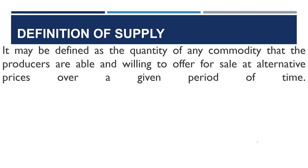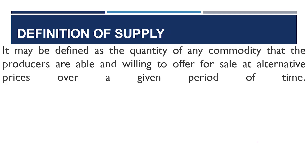Definition of supply. What is supply? Just like demand — demand is the willingness and the ability of a consumer to purchase goods and services at a given price over a particular period. Supply, on the other hand, is the quantity of any commodity that producers or suppliers are willing to offer for sale at a given price over a given period of time. It is the commodity that producers are able and willing to offer for sale at a given price over a particular period of time.